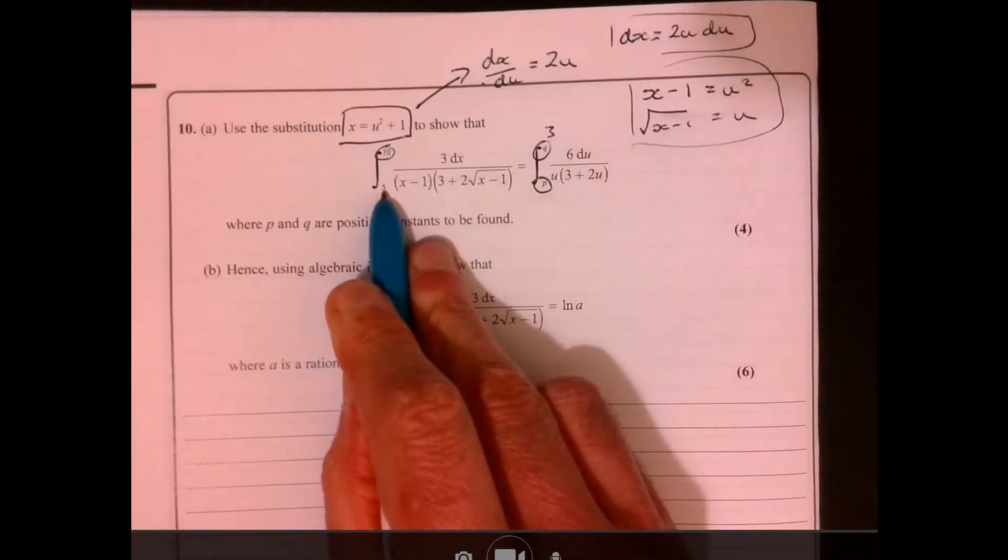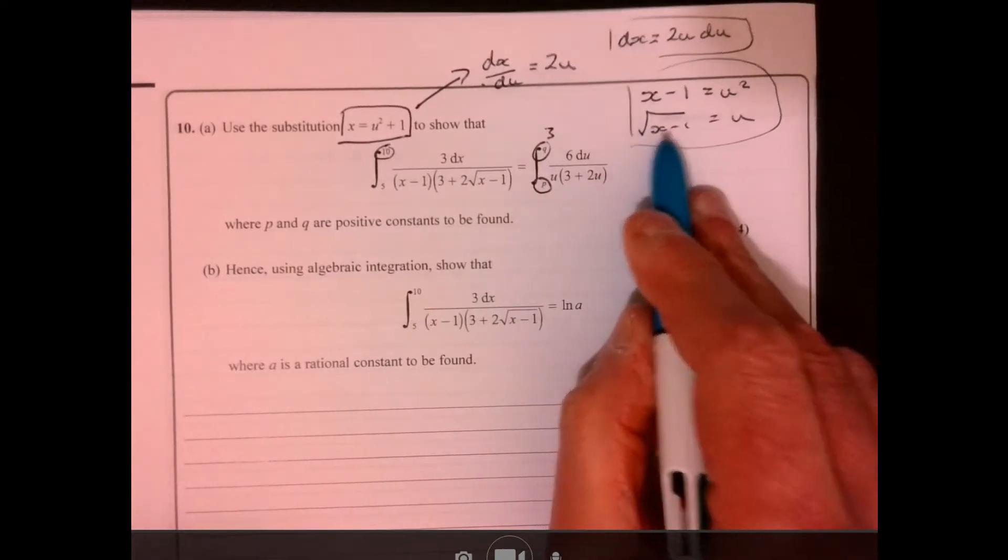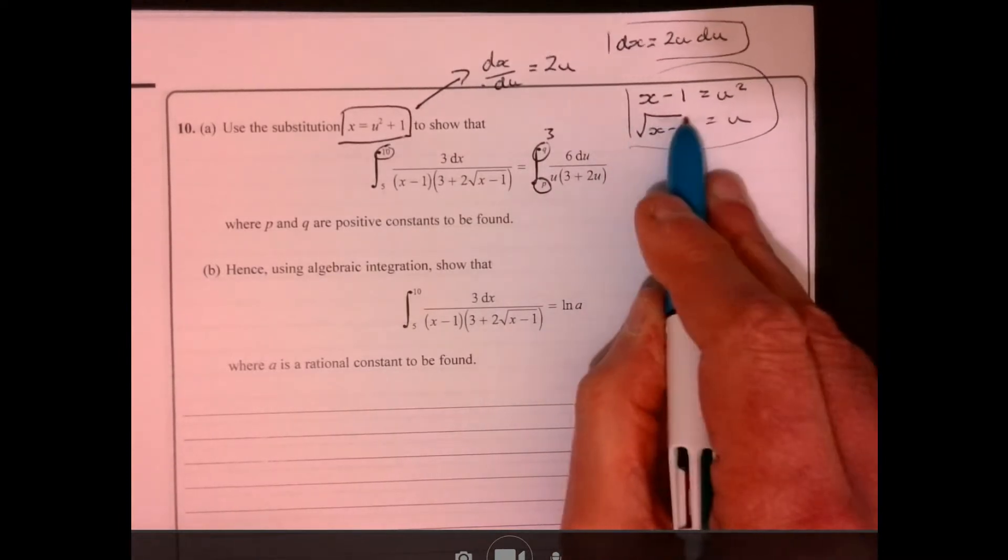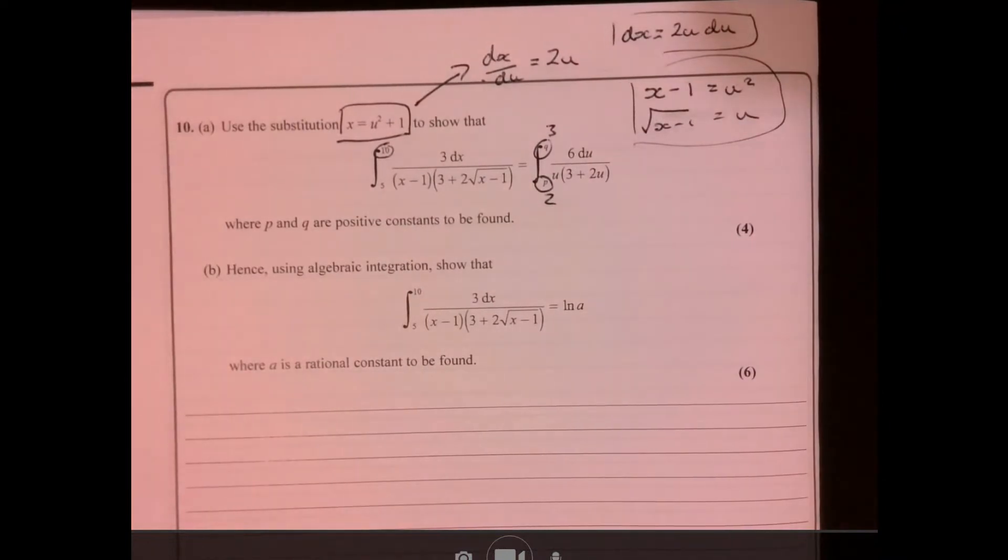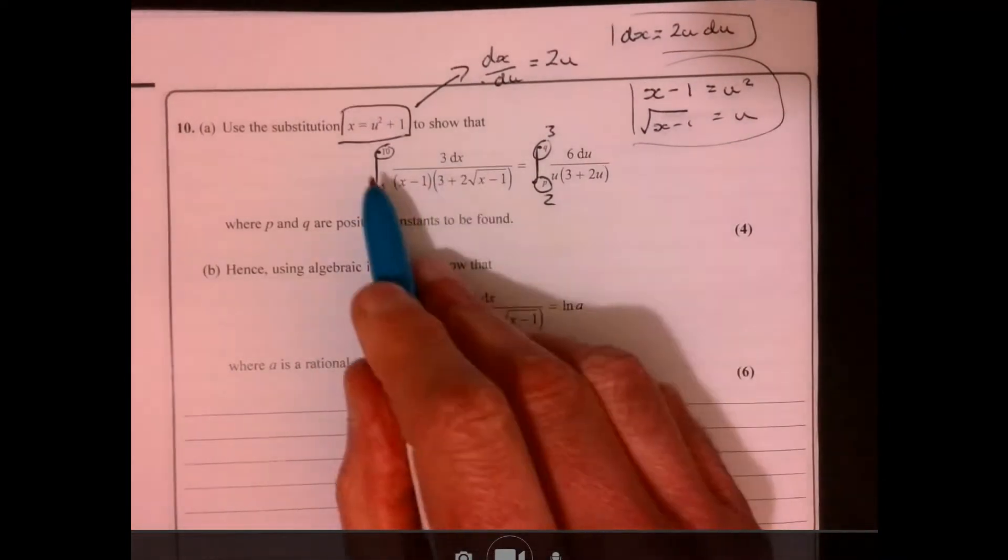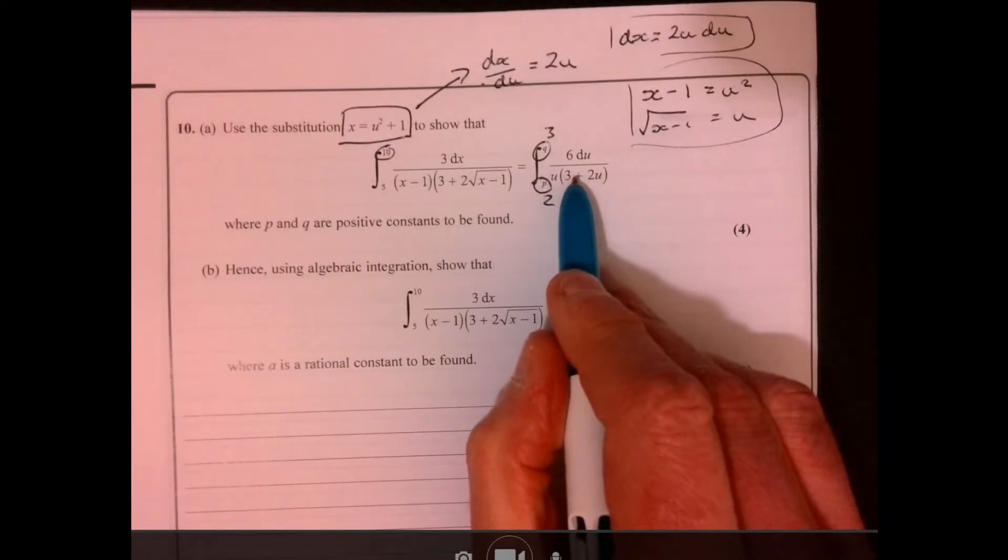Do the same with 5. So 5 take away 1 is 4, root is 2. So that value there has got to be 2. Right, now then, let's start thinking about how on earth we're going to get over here.